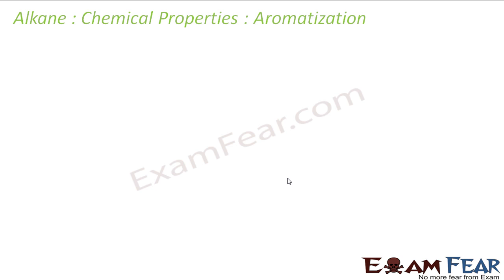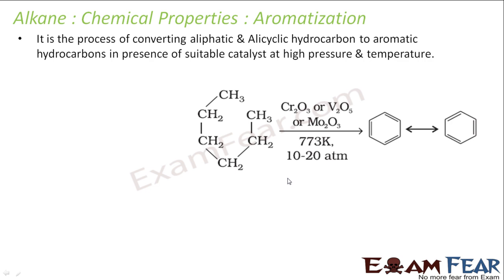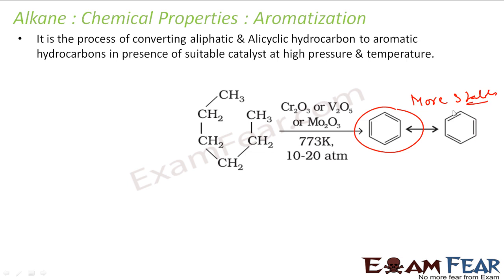The next reaction is aromatization. Aromatic substances are more stable and have lower energy, so some aliphatic substances will try to convert into aromatic substances when given the chance. This aliphatic compound wants to become aromatic because it is more stable. So if you take an aliphatic compound and heat it with a suitable catalyst at high temperature and high pressure, it will convert into an aromatic compound.